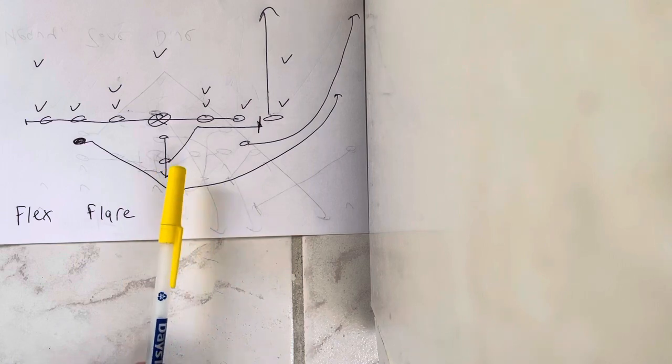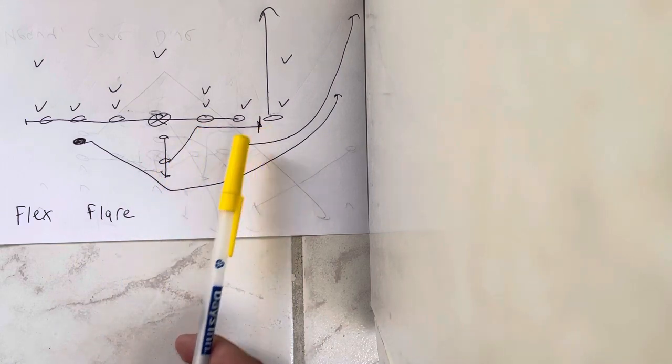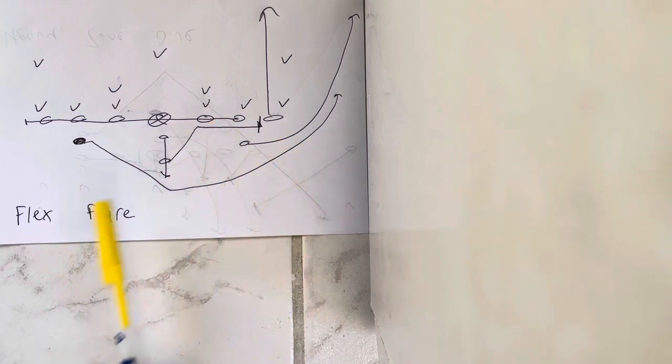And what's going to happen is now the B-back's going to touch the guard flat and out, block the first threat off from the guard out.